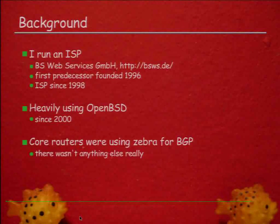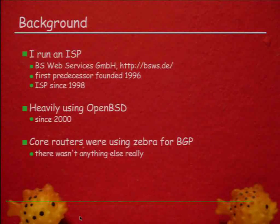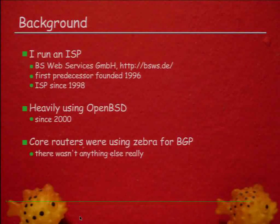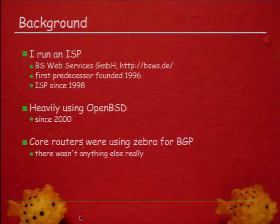Zebra, back then, pretty much was the only BGP implementation to run on a Unix system. There were some tiny projects that you couldn't really use, but that was the one at that time. It was written by a guy from Japan, which in itself is not a problem at all, except that he wrote all the commands in the code and all the documentation in Japanese. These days I managed to speak 10 to 15 words of Japanese. Back then, it was zero. So I couldn't quite make sense of that. And unfortunately, the software design was utterly wrong.